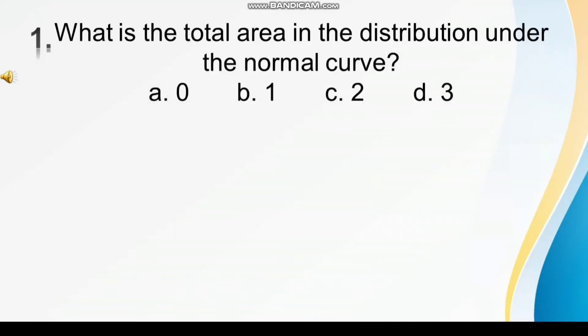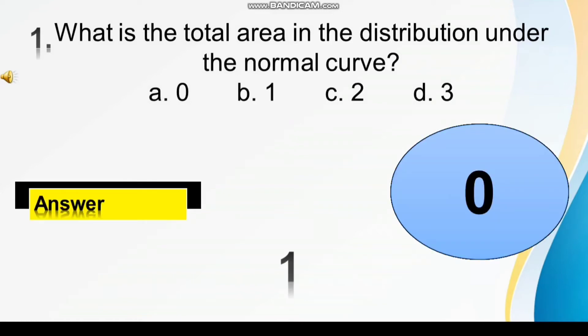What is the total area in the distribution under the normal curve? A, 0, B, 1, C, 2, D, 3. The correct answer is... 1, 9, 8, 7, 6, 5, 4, 3, 2, 1. Ta-da! Is 1.